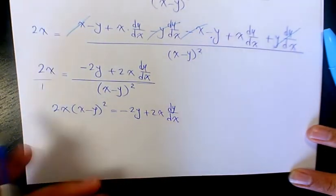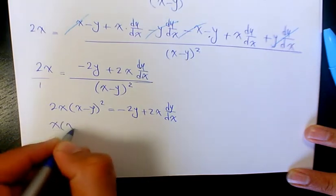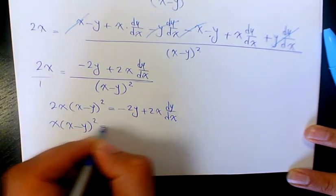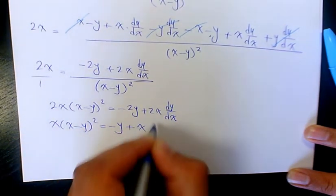I divided the whole thing by 2. So it's gonna be x times x minus y to the power of 2 equals to negative y plus x dy over dx.